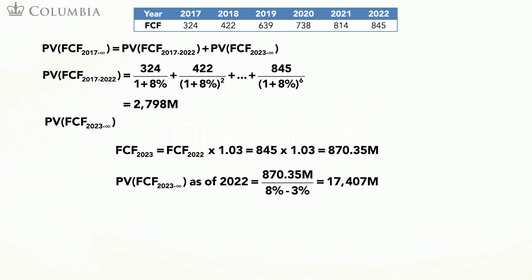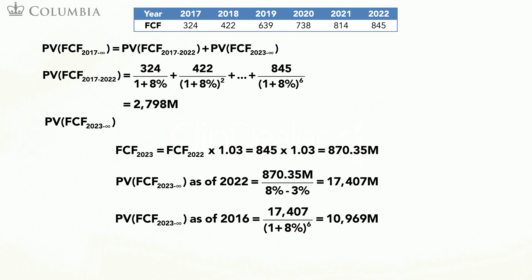The value is $17,407 million. Now, we need to discount this value to the present, that is, by six periods. This discounting is given by the following formula, leading to a value of $10,969 million. The enterprise value is the sum of these two values, or $13,767 million.